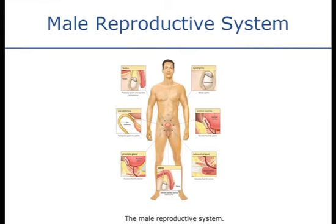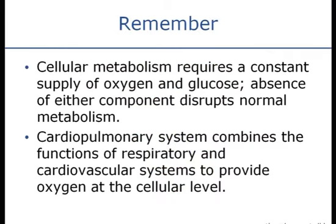The male reproductive system includes the testicles which produce sperm and secrete testosterone. You've got the epididymis where sperm is stored, the vas deferens which transports sperm to the urethra, the seminal vesicles and prostate gland which secrete fluid for semen, the bulbourethral gland which also secretes fluid for semen, and the penis which delivers semen during intercourse and is also where urine leaves the body.